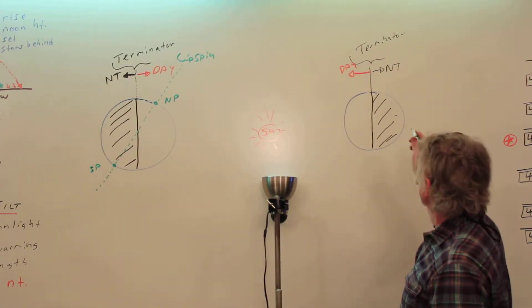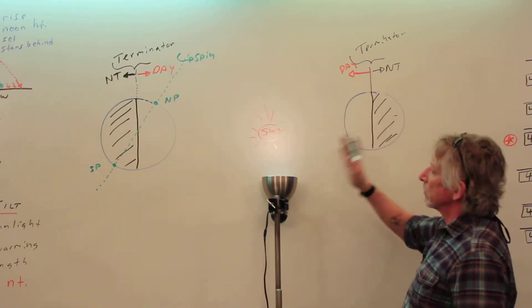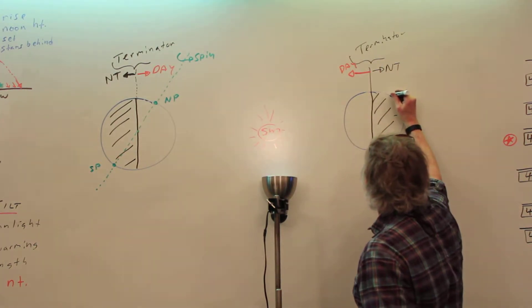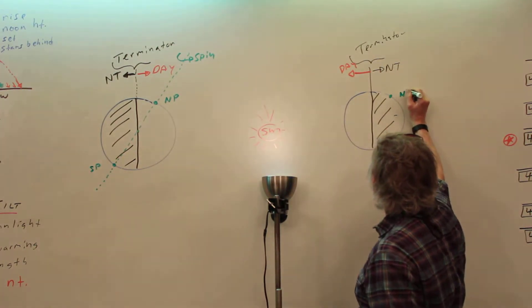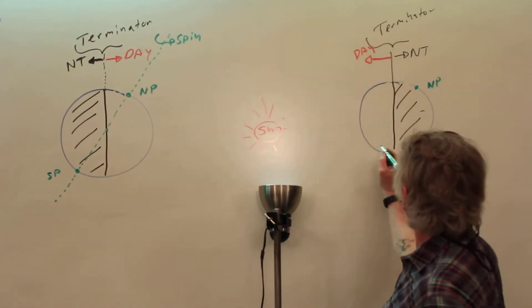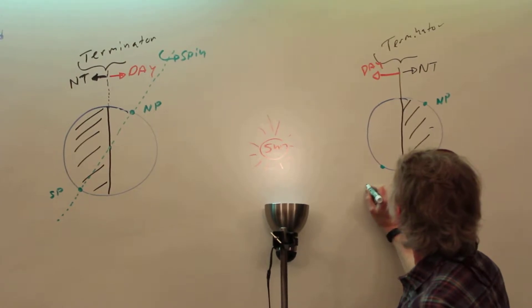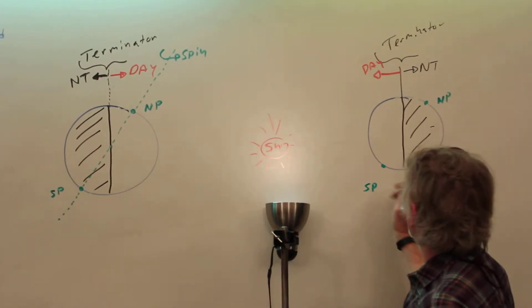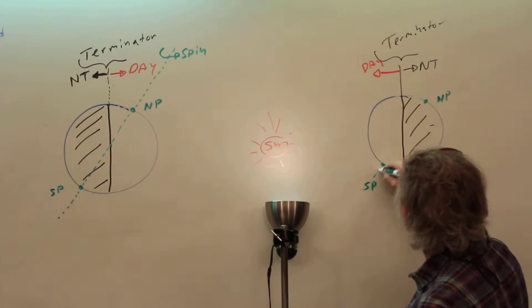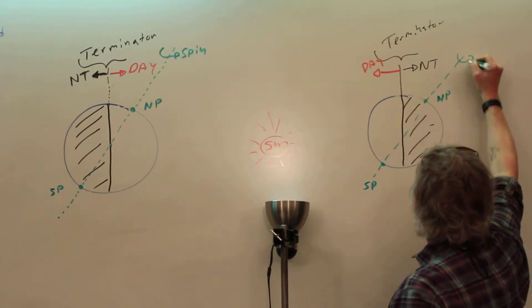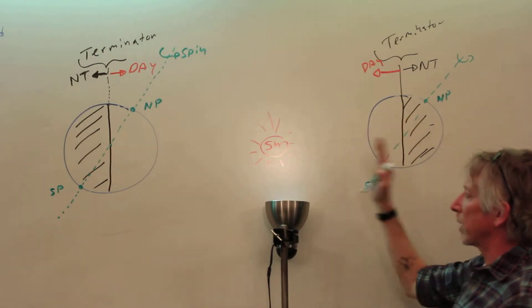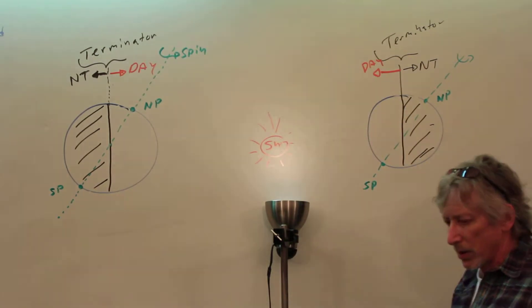We are back now. We're going to show it tilted as Earth comes around. North Pole still tilted to the right, but now that's away from the Sun. South Pole tilted to the left still, but towards the Sun. Spin axis. Spinning around like this — not spinning around the Terminator. The Terminator is set because sunlight is coming over here.